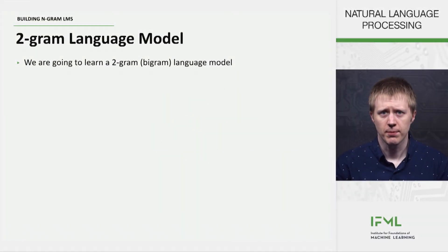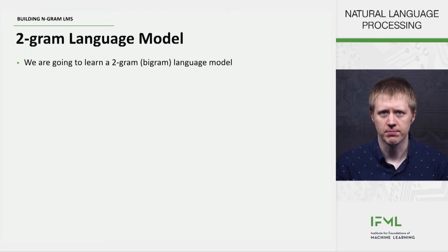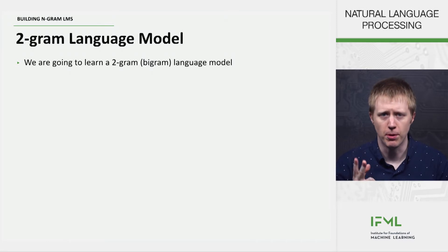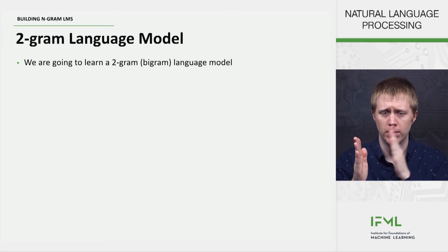In this segment we're going to talk about how to actually build these n-gram language models that we set up previously. We're going to be dealing with mostly a 2-gram, or what we're also going to call bigram language models. These terms both mean the same thing — they both predict the next word from one word of context.